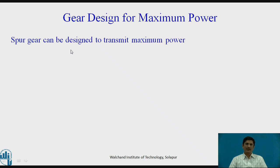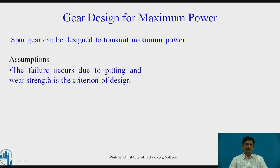Let us see how we can do it. The spur gear can be designed to transmit maximum power. There are typical assumptions for this derivation. The failure occurs due to pitting and wear strength is the criteria of design. It is assumed that the failure occurs due to pitting and wear strength is the criteria of design.